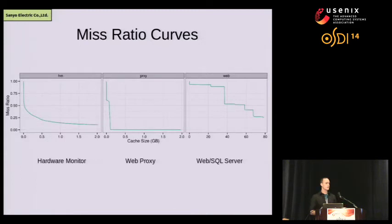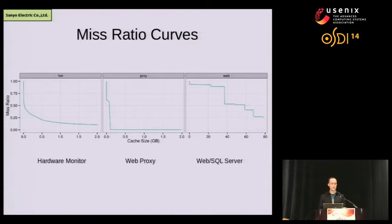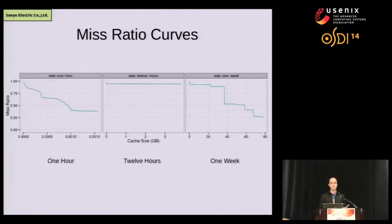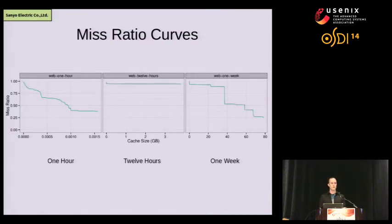Miss ratio curves change dramatically according to the workloads we're looking at. These workloads are taken from MSR Cambridge — a hardware monitor, a web proxy, and the SQL server — and you can see that the shape of the curves, the sizes, and the hit rates are all quite distinct. These MRCs also change quite dramatically over time within a given workload. Looking at the SQL server over just the first hour, the first 12 hours, and then the entire week, we can see that the curve changes quite dramatically over time.